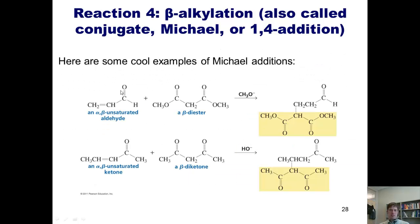Here are some examples of Michael additions. If I begin with an alpha-beta unsaturated aldehyde and react a beta-diester with a base, the base strips off a proton, gives a negative charge at that carbon, and that charge comes in at the beta position. After this double bond gets protonated, I get the final 1,4-addition product. Similarly, if I take an alpha-beta unsaturated ketone and react it with a diketone, the base strips the alpha-hydrogen, giving a negative charge that comes in at the beta position; the electrons come up, get protonated, and I get the 1,4-addition product.